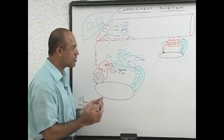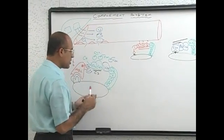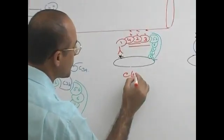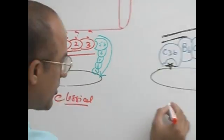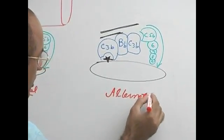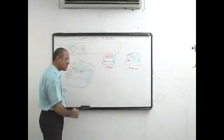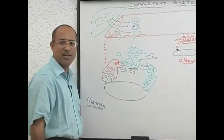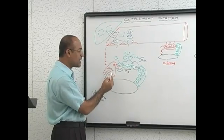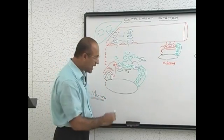Now compare and contrast. This was your classical pathway of complement activation. This was your alternate pathway of complement activation. And what is this? Very easy. Mannose binding lectin pathway or lectin pathway simply.